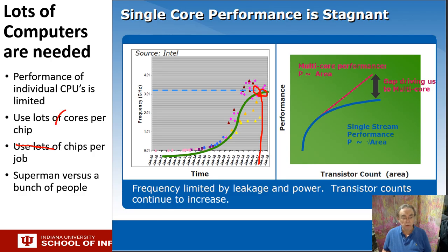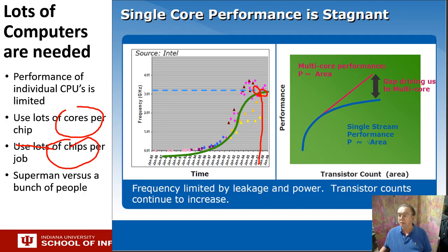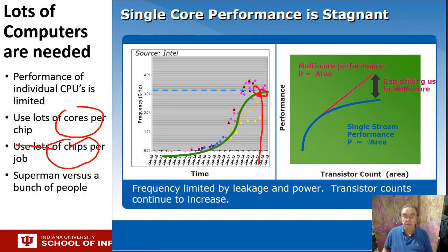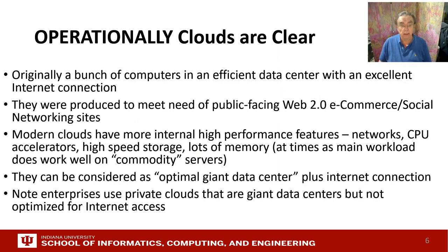We need cores per chip and chips per job. When you discuss parallel computing, you note the issue of whether you have lots of systems, cores, and chips solving a problem or just one running faster — it's like the difference between Superman and a bunch of people working as a society.